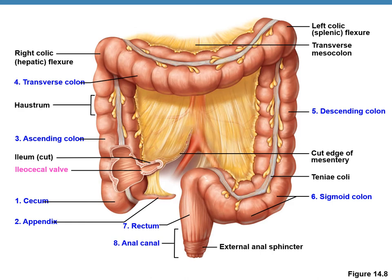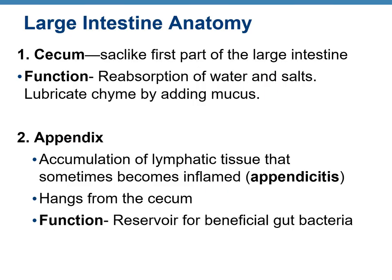On the other side of the cecum is the ascending colon, going upward. It then travels horizontally as the transverse colon, then moves downward as the descending colon, makes an S-shaped turn as the sigmoid colon, then opens into the rectum — just a muscular tube — and finally into the anal canal. The anal canal has two controlling mechanisms: the external and internal anal sphincters.